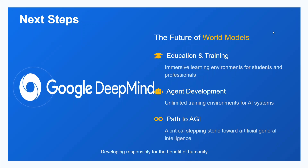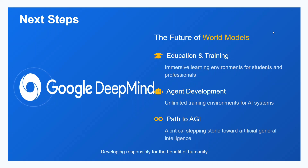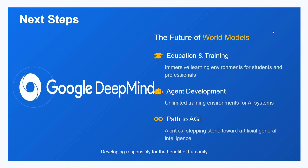Talking about next steps and the future of world models: obviously for education and training — no doubt about it — agent development and training, and it is a critical step in the path to AGI. With this, it's a wrap. I hope you try to read the blog. It is still in research mode, so the model is not released yet — they have just released a demo. Looks quite interesting. I hope you try it out.